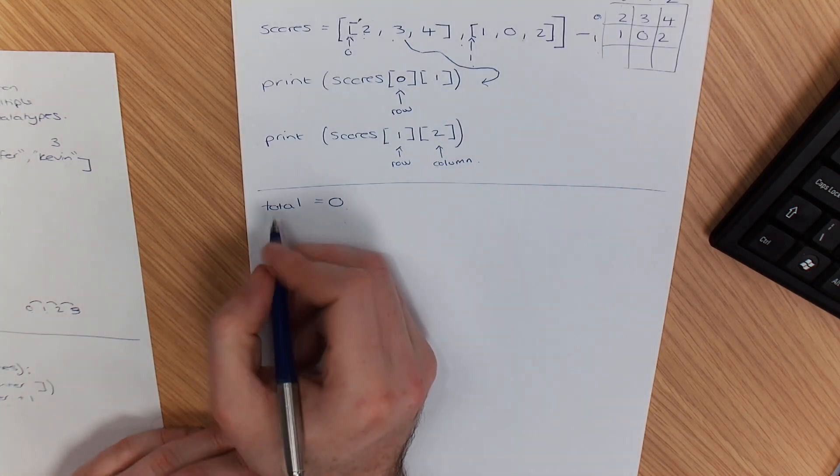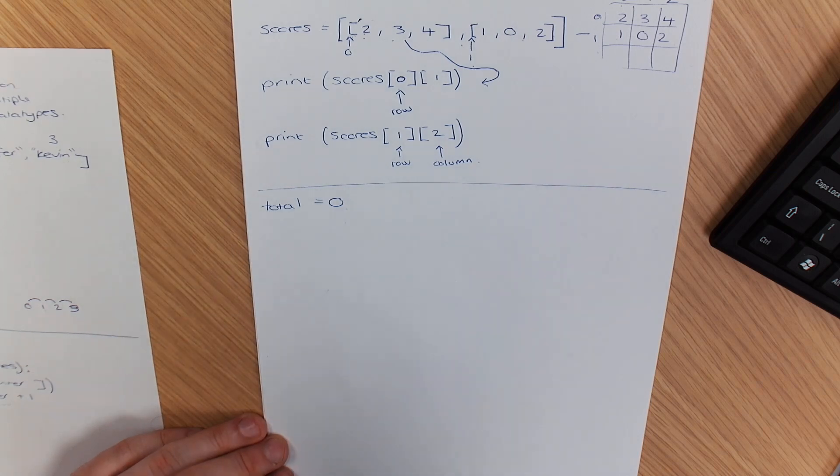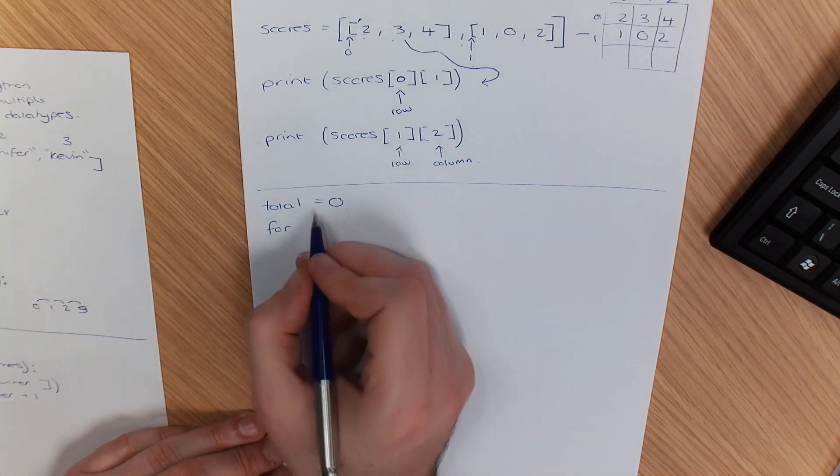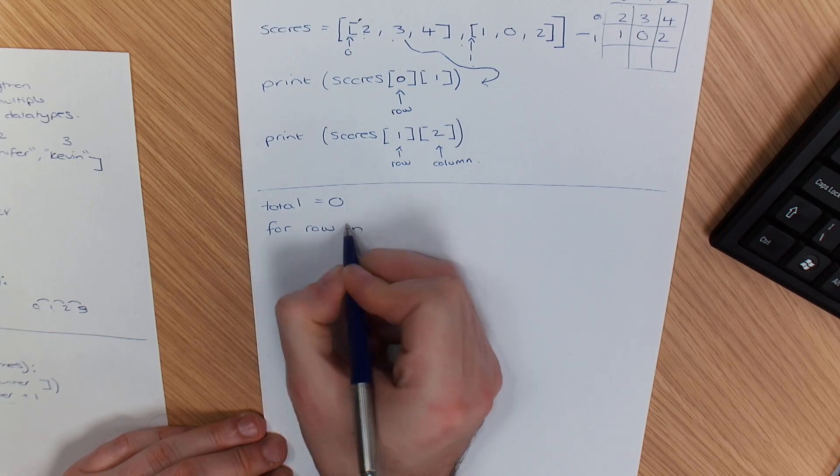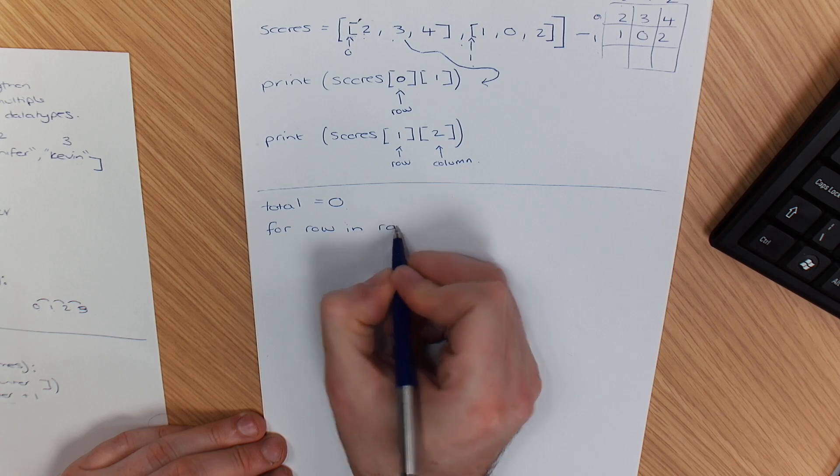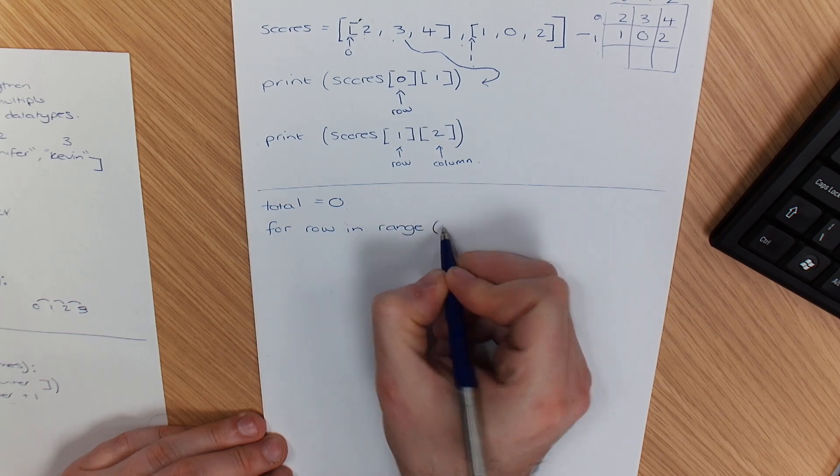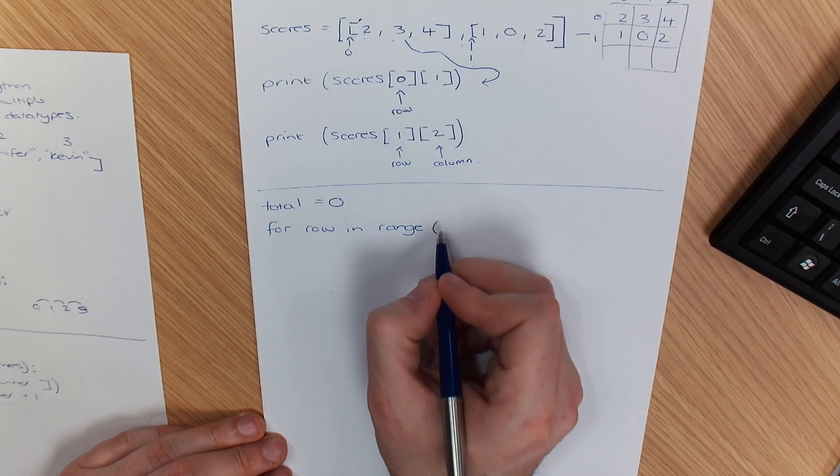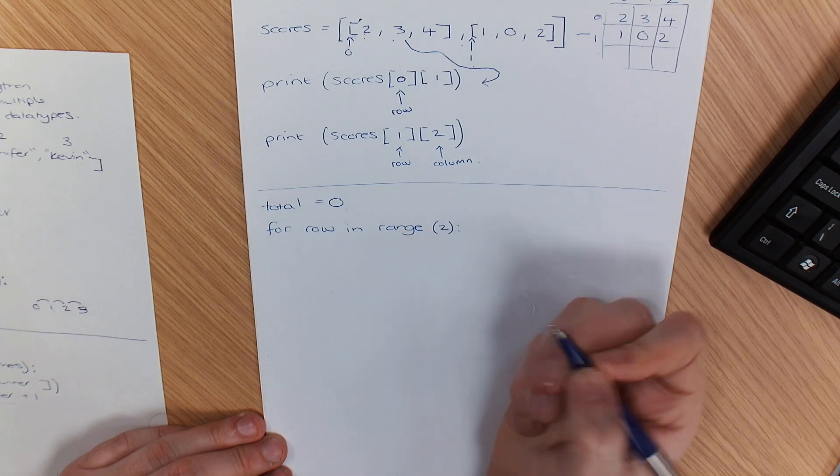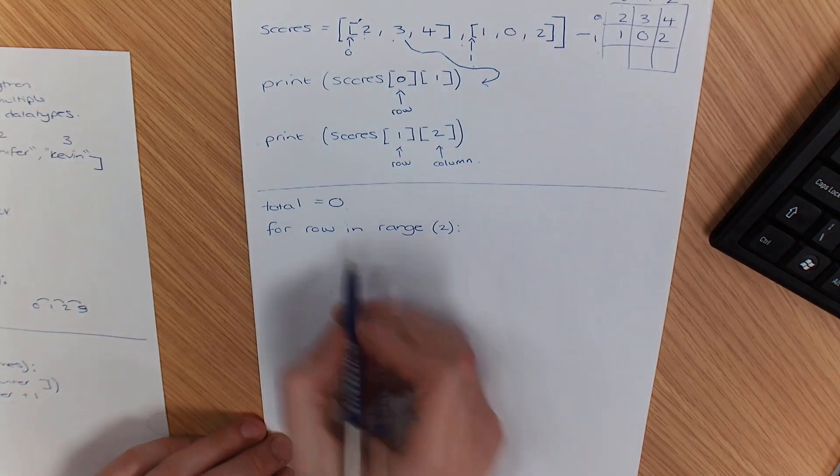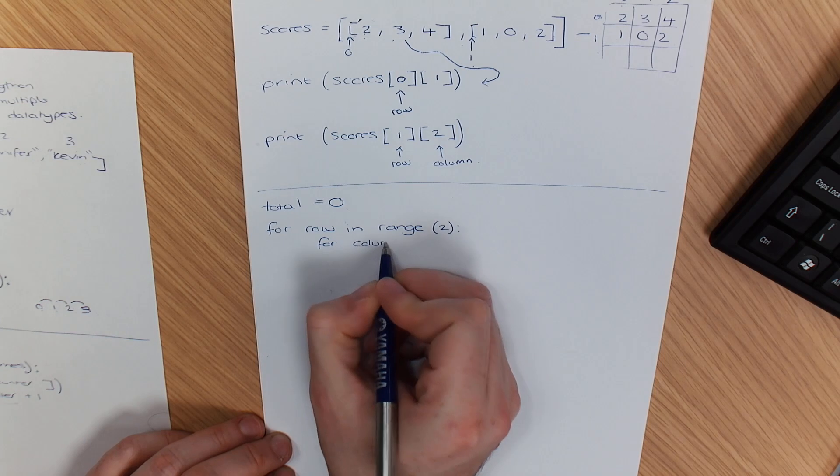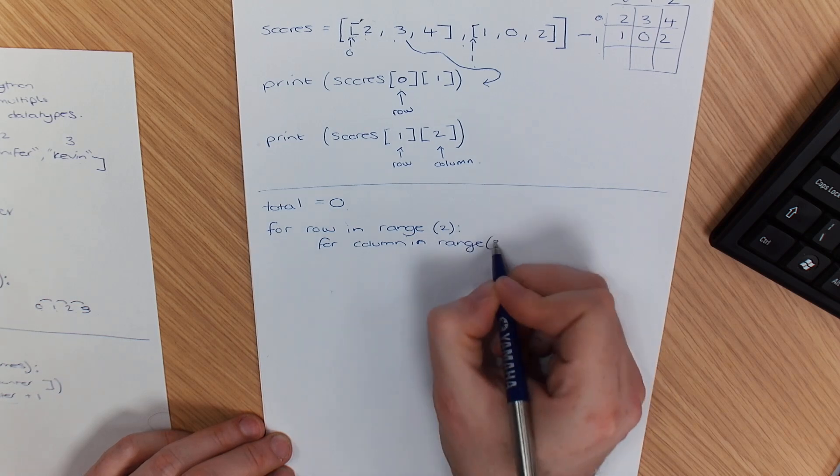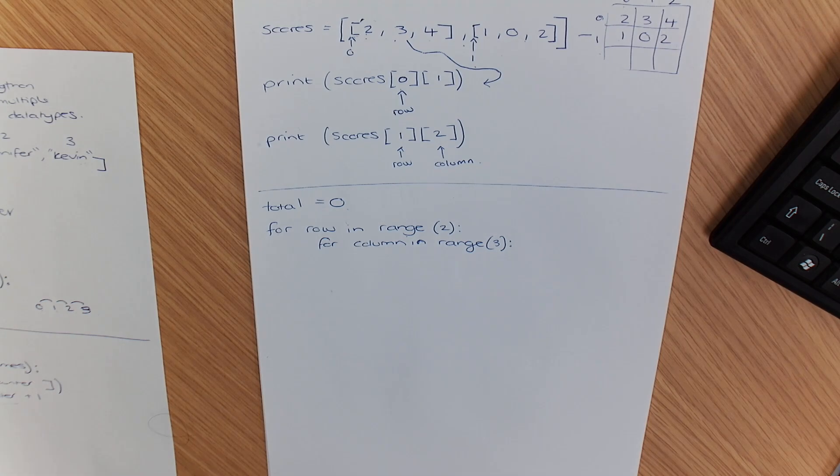Now what I'm going to do, this is where it's slightly different. Instead of using i and j just to make it clear, I'm going to use the word row and column. So for row in, I'm going to use numbers at this point just to demonstrate it, row in range, how many rows have we got? Yeah, there's going to be two iterations, so row in range 2. But then you do your next one, for how many columns have we got, in range 3.